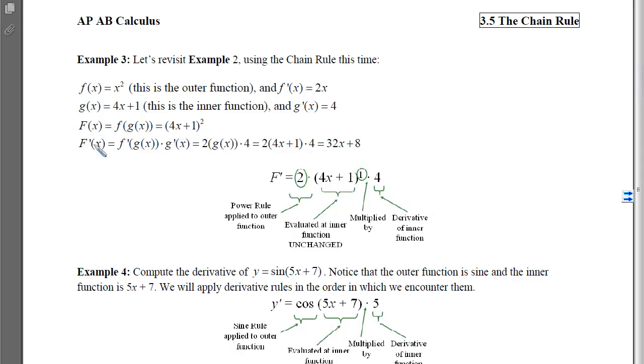So if I want to take the derivative of this (4x + 1)², I'm going to take the outer function, which is the squaring or the power rule applied, which would be 2 times the inside unchanged raised to the 1. So I've applied that power rule to the inner function, and then I've multiplied by the derivative of that (4x + 1) to get a 4.